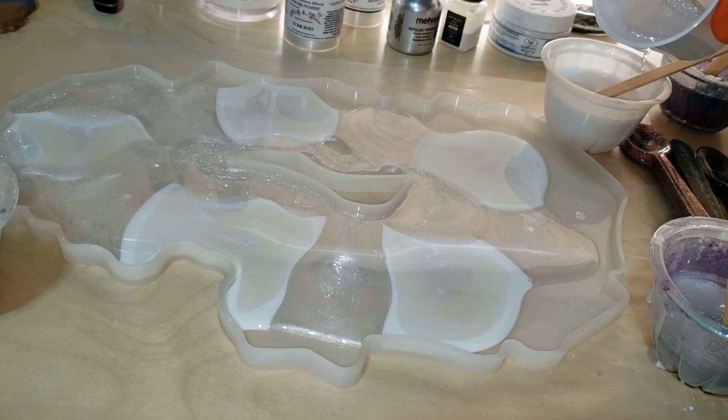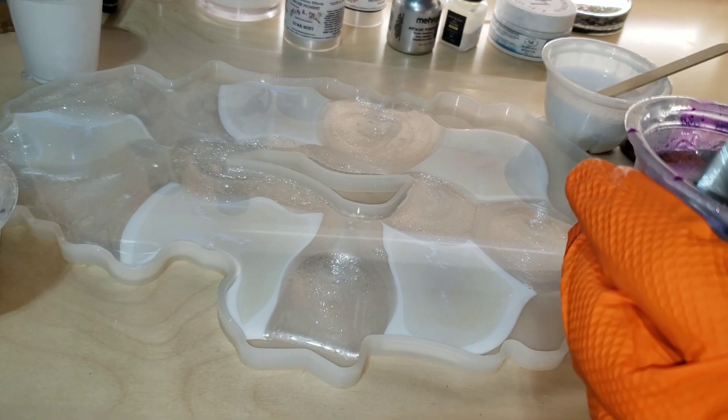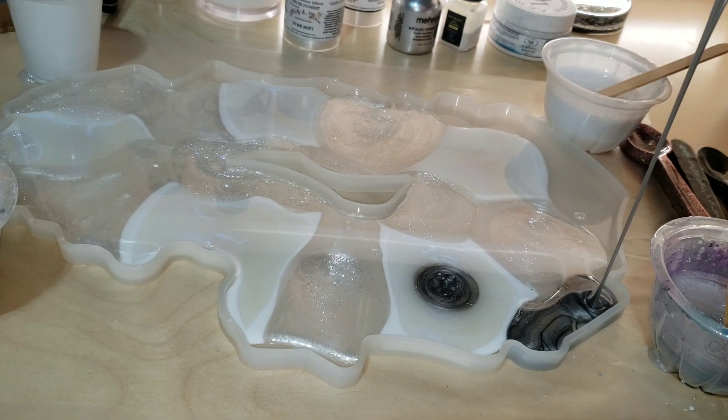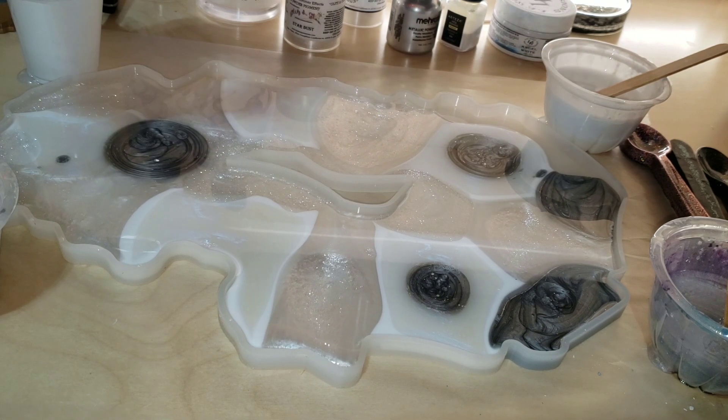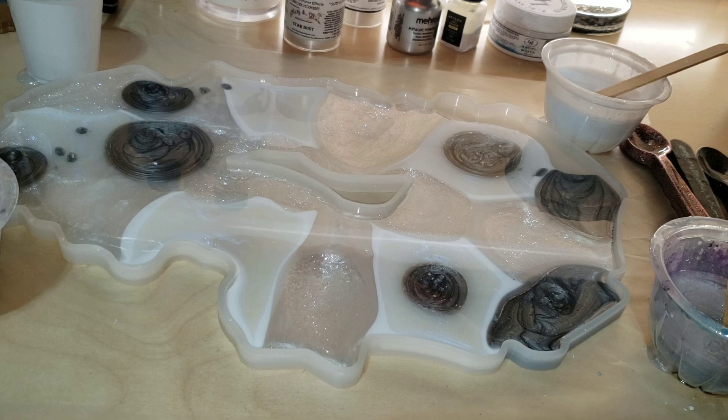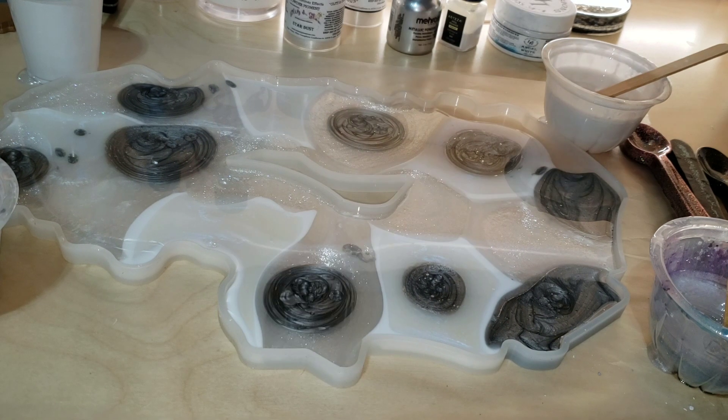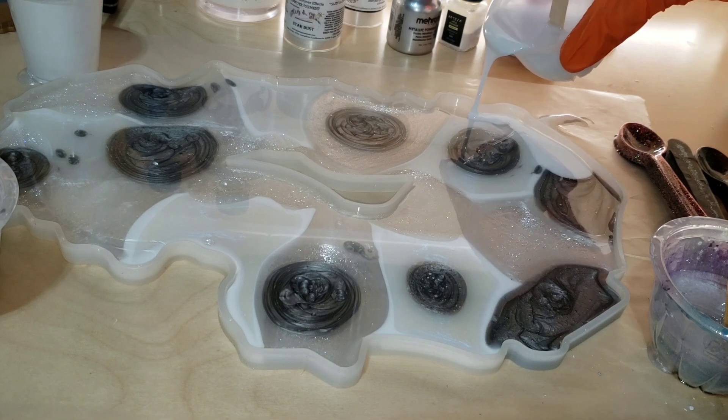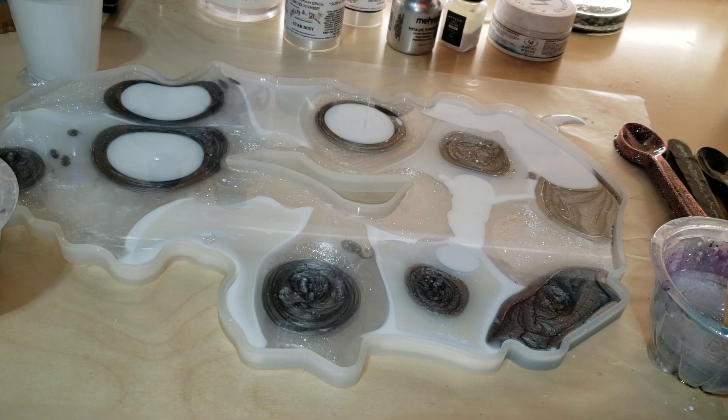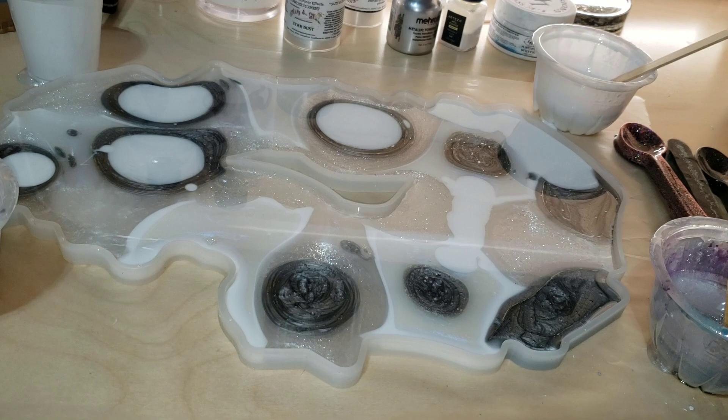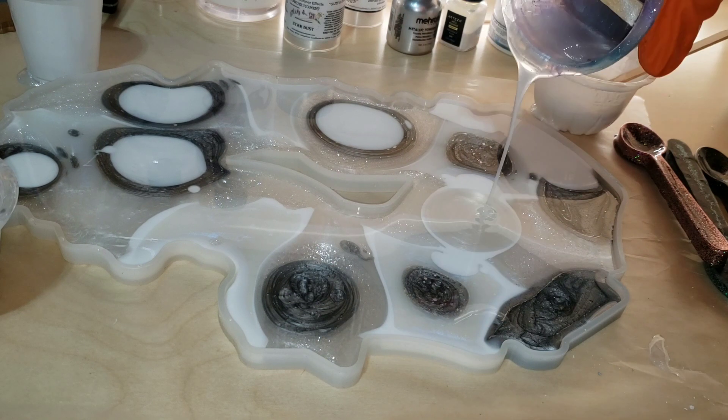What I'm doing here is I'm just going in with different puddles of color, basically doing a puddle pour. I had about 12 ounces of resin mixed up between all the colors. I mixed up three ounces of the white, pearl white, Stardust, and a little bit less of the silver because I didn't want it to completely take over.